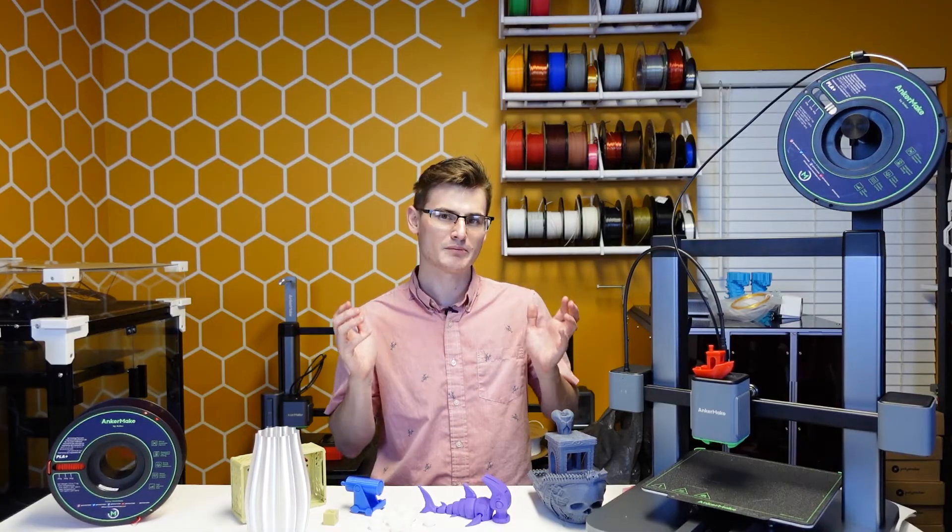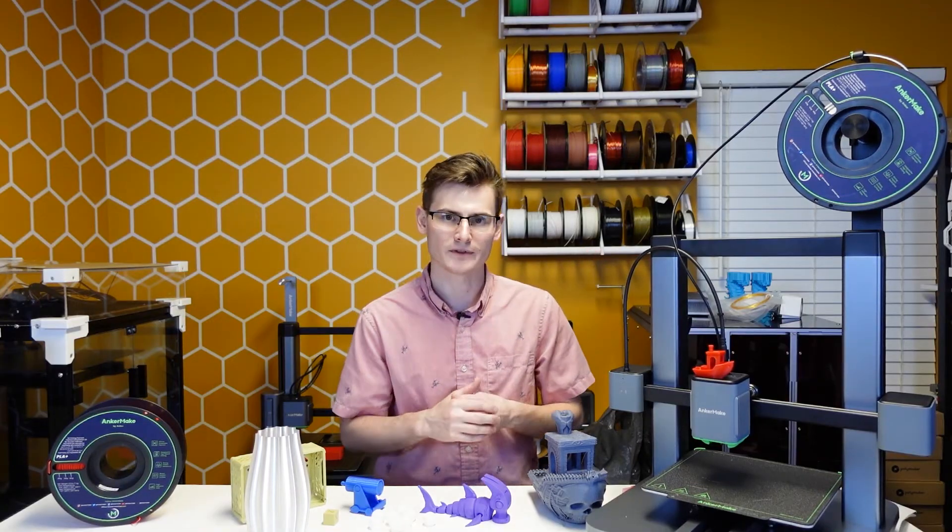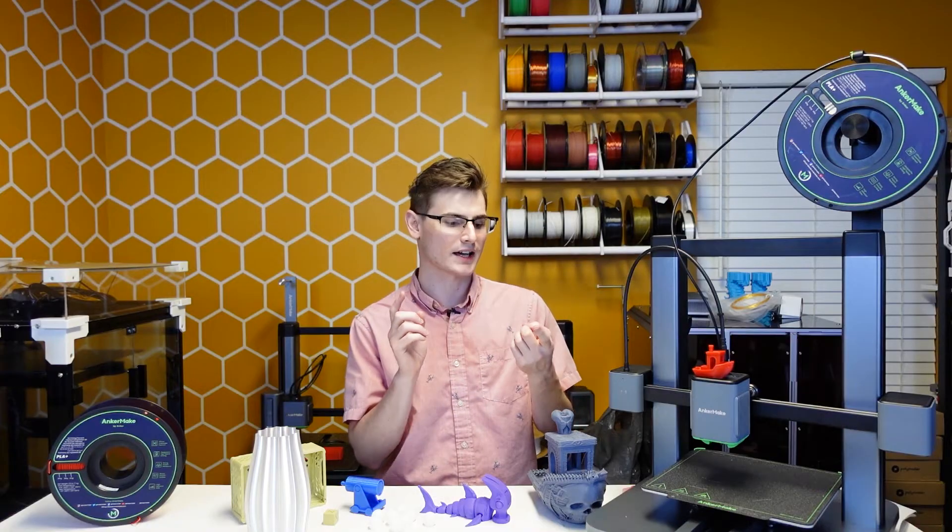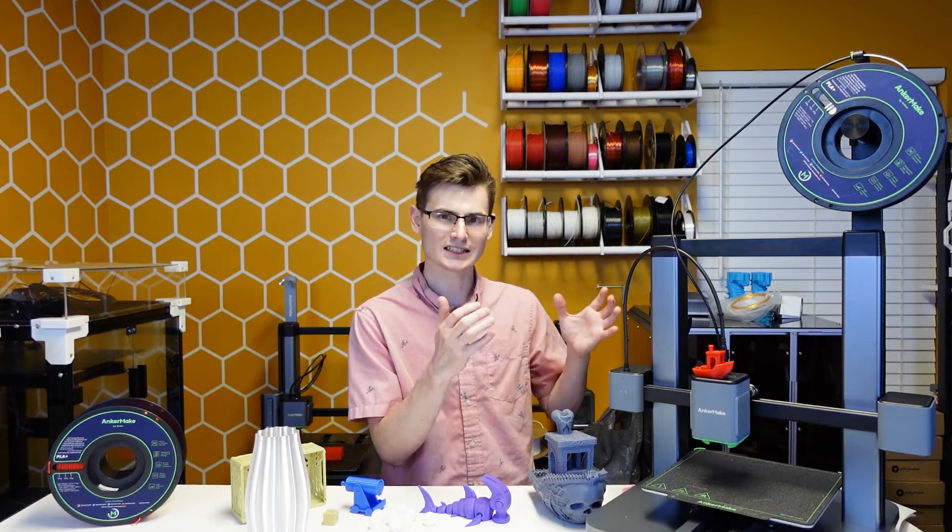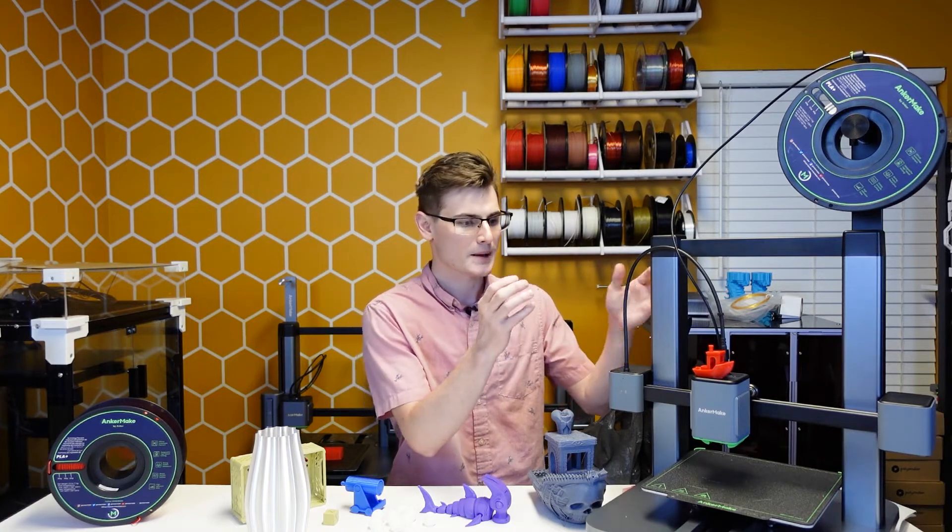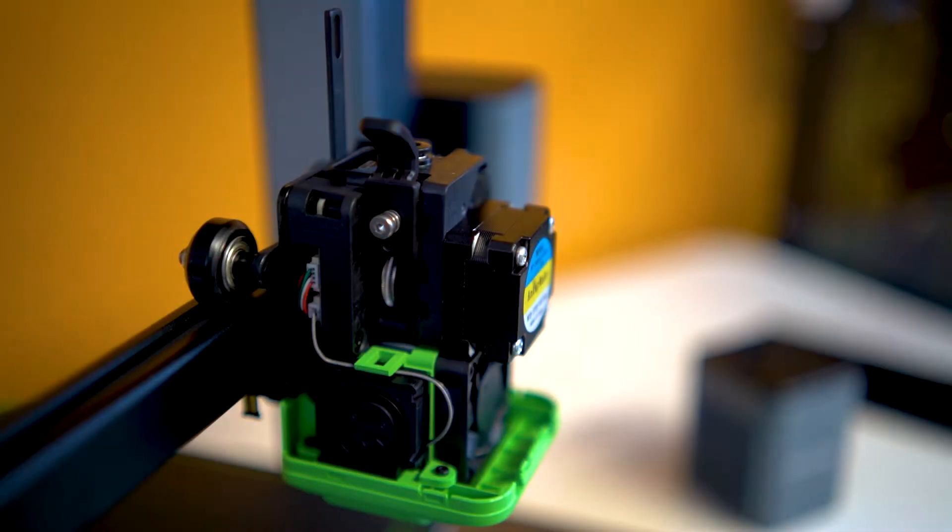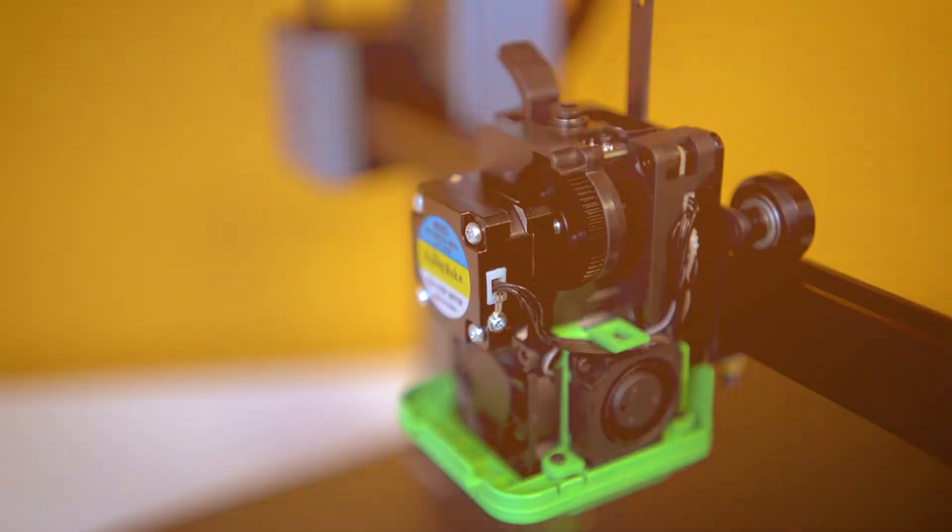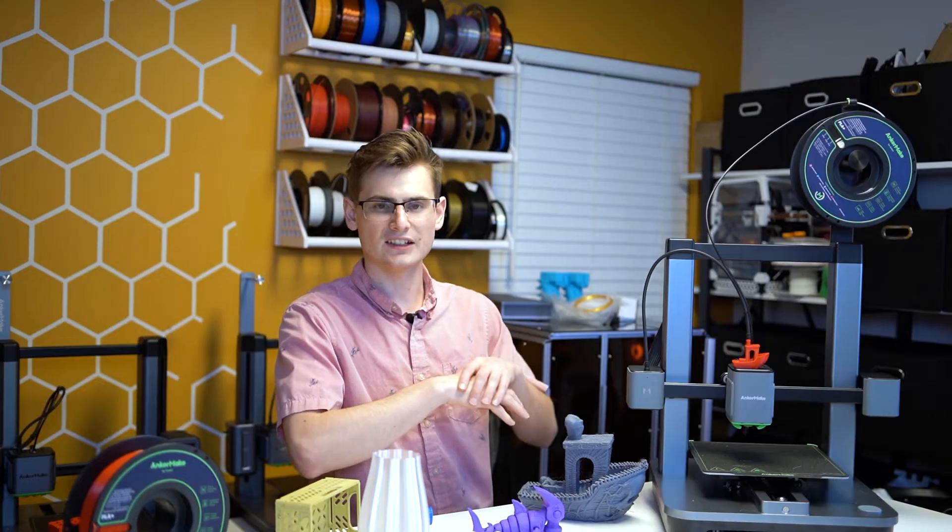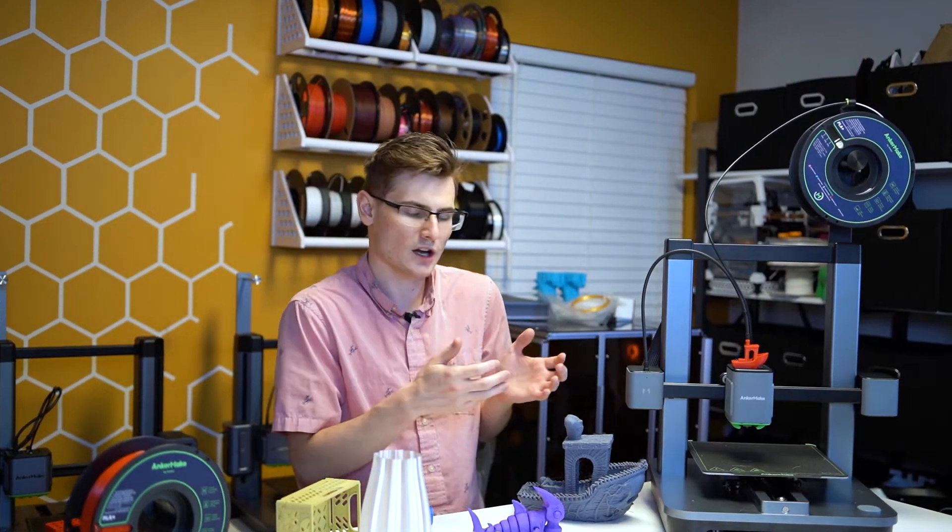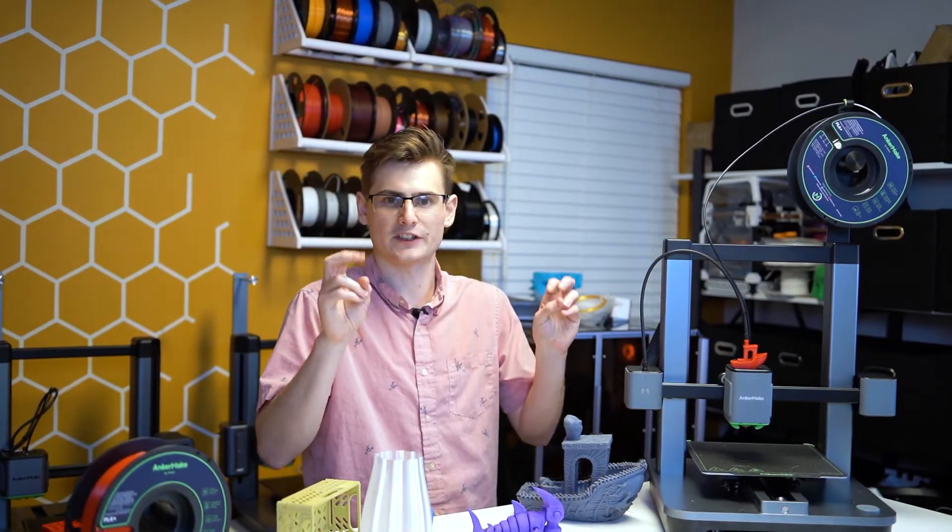I would say one of the biggest things holding the AnkerMake M5C back from competing with the likes of Bamboo and Creality with the K1 series as well as Prusa is that the M5C doesn't have an accelerometer buried in the hotend. But that doesn't mean that the M5C can't produce outstanding results. The M5C can still have incredible results while maintaining the hands-off experience.